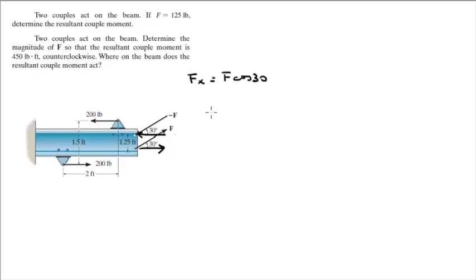Assuming counterclockwise is positive, the sum of the moments is equal to the moment being created by this 200 couple moment, which is 200 times the distance between them, which is 1.5, plus the moment created by the 2x components, because remember the y components don't do anything, they cancel each other out. The 2x components are f cosine of 30 times the distance between them, which is again 1.25.